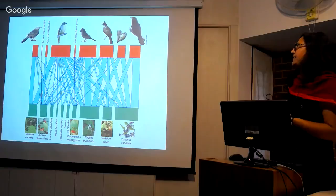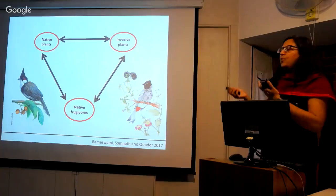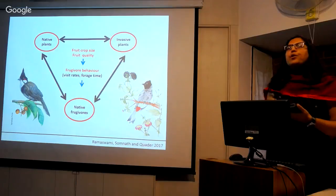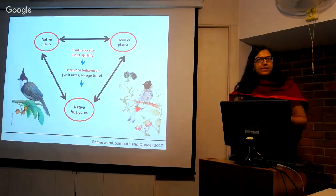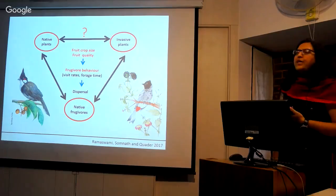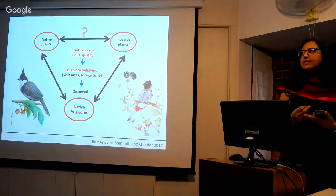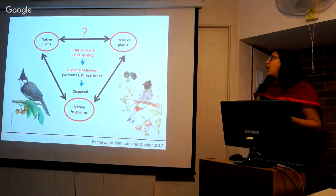To summarize the first study: fruit removal from native and invasive plants by native frugivores was affected by fruit crop size and fruit quality, which in turn affected frugivore behavior — how many frugivores visited a plant and how much time they spent foraging — and these behaviors affected how much fruit was removed. However, we could not comment on whether native and invasive species are actually competing with each other, or whether birds preferentially go to Lantana over other native species.